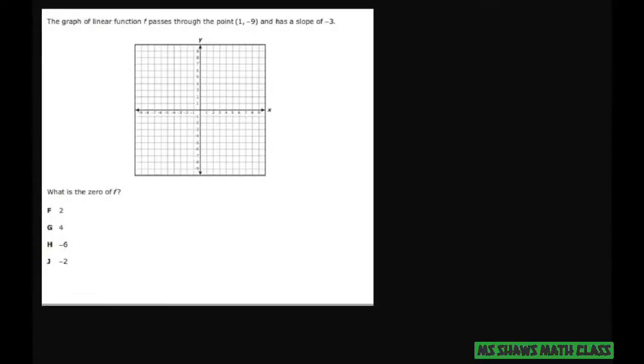Hi everyone. The graph of a linear function passes through the point (1, -9) with the slope of -3.